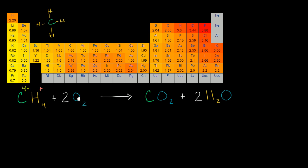Now we have molecular oxygen — oxygen bonded to oxygen. All oxygens are created equal, or we'll assume that these oxygens are not different isotopes or anything like that. In this reality, there's no reason why one oxygen would hog any electrons from the other oxygen. So in this world, oxygen has an oxidation state — when it's in this molecular oxygen form — of zero, an oxidation number of zero.